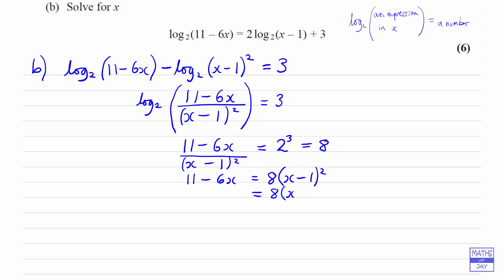Next thing to do is to not have a fraction. So let's multiply both sides by the denominator. So we've got 11 minus 6x is equal to 8 times x minus 1 squared. And we can multiply that bracket out. x minus 1 times x minus 1, so that will be x squared minus 2x, and multiplying negative 1 by negative 1 will be plus 1. And let's multiply out that bracket so that we've got 8x squared minus 16x plus 8. And let's gather all the terms onto one side. So that will give us our quadratic 8x squared minus 10x minus 3 is equal to 0.